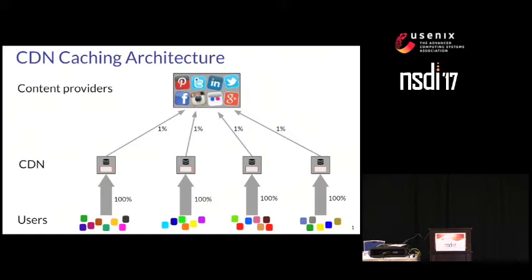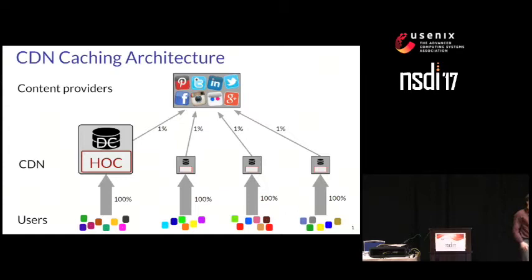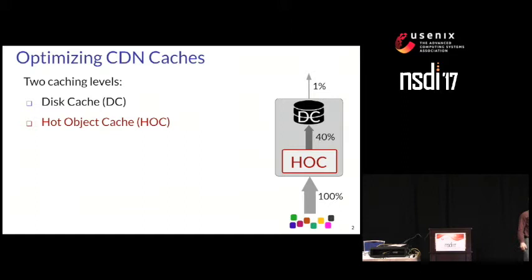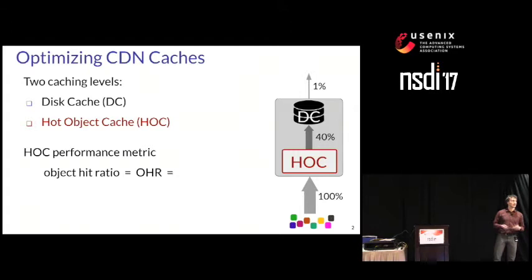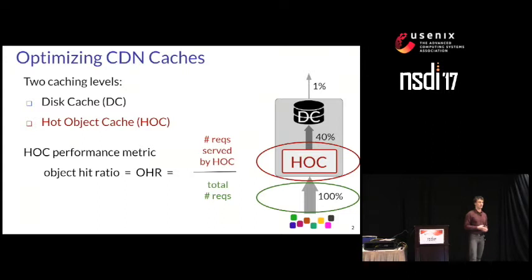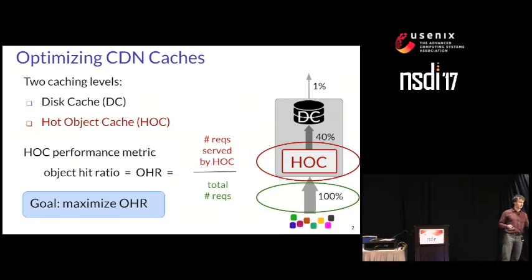What we are interested in is what happens inside a CDN server. There are two components: the HAWC and the DC. The HAWC is the first caching level — an in-memory cache that is very fast but also quite small. The disk is the second caching level: larger but a little bit slower. We're interested in building a better HAWC system, and our performance goal is to optimize the object hit ratio, defined as the number of requests served by the HAWC divided by the total number of requests.